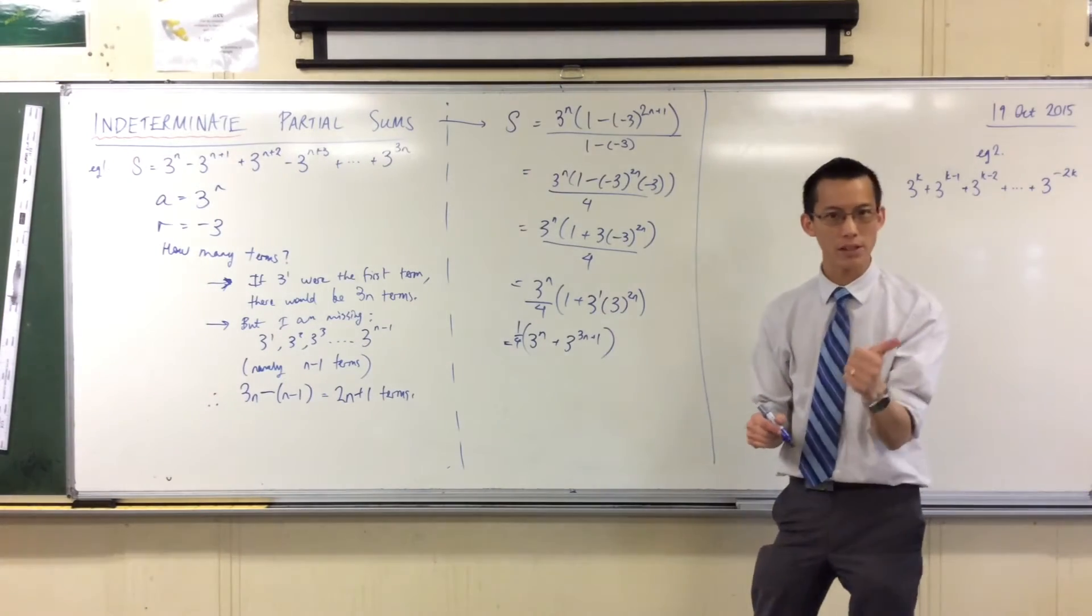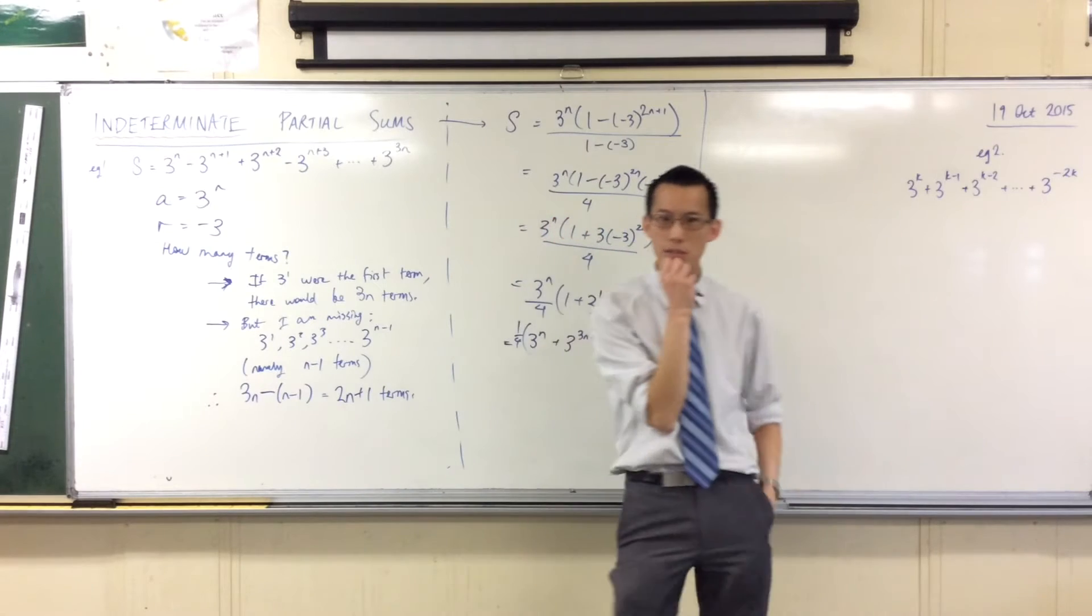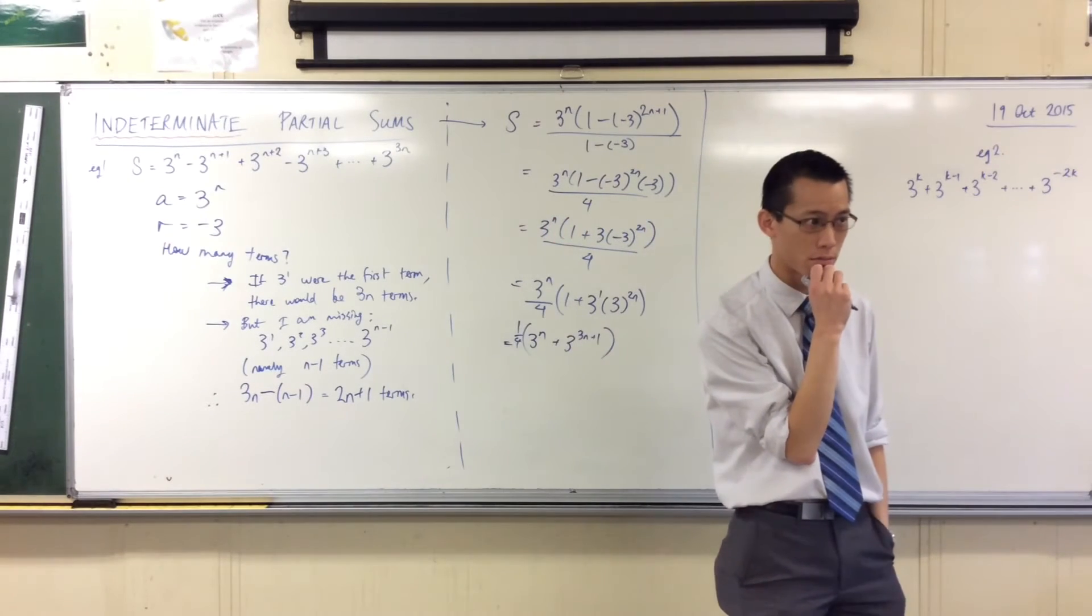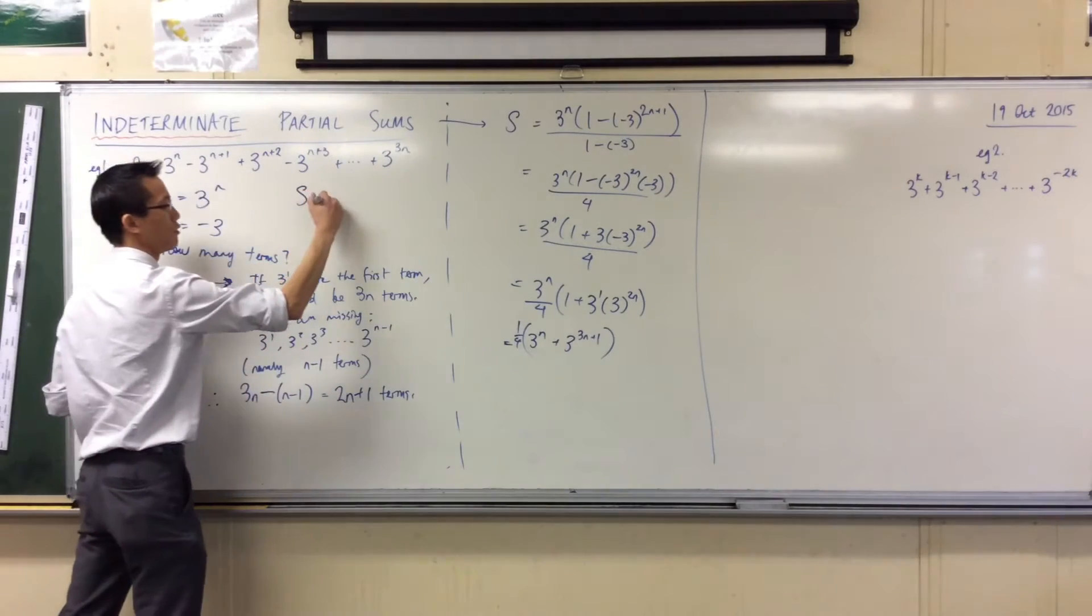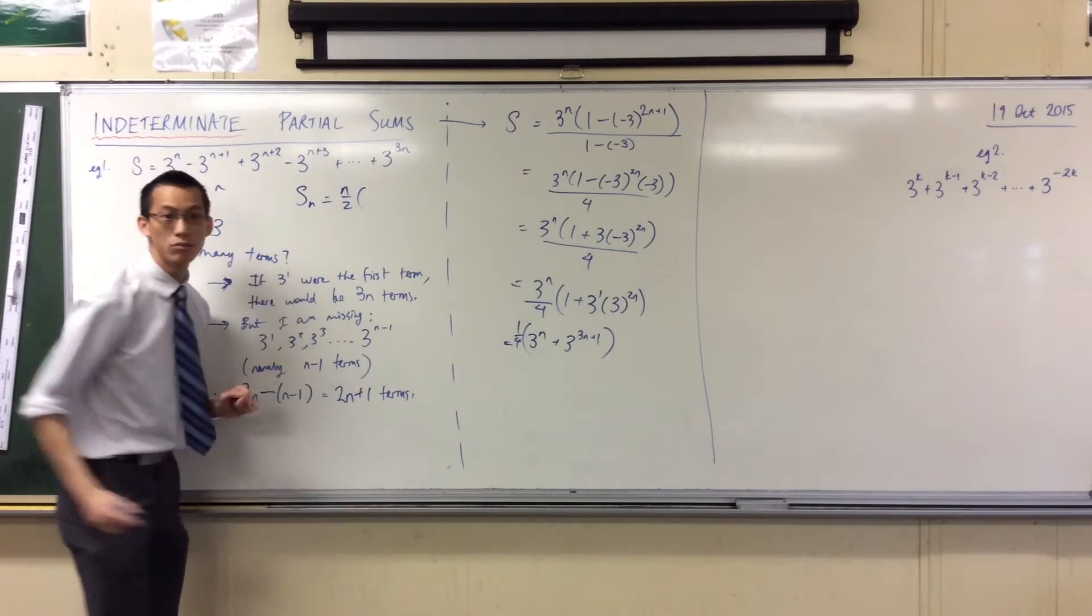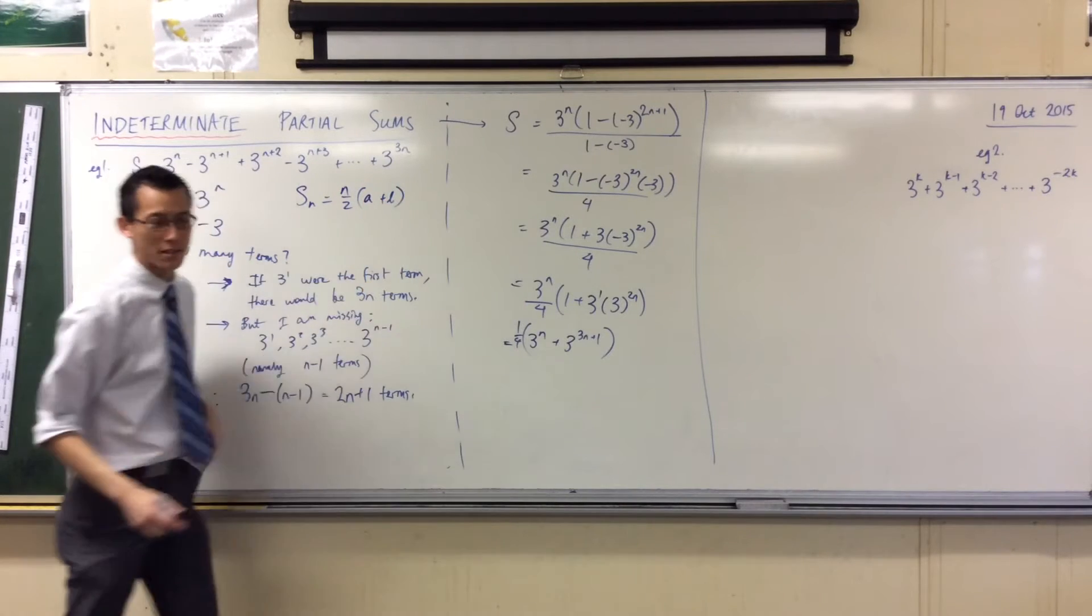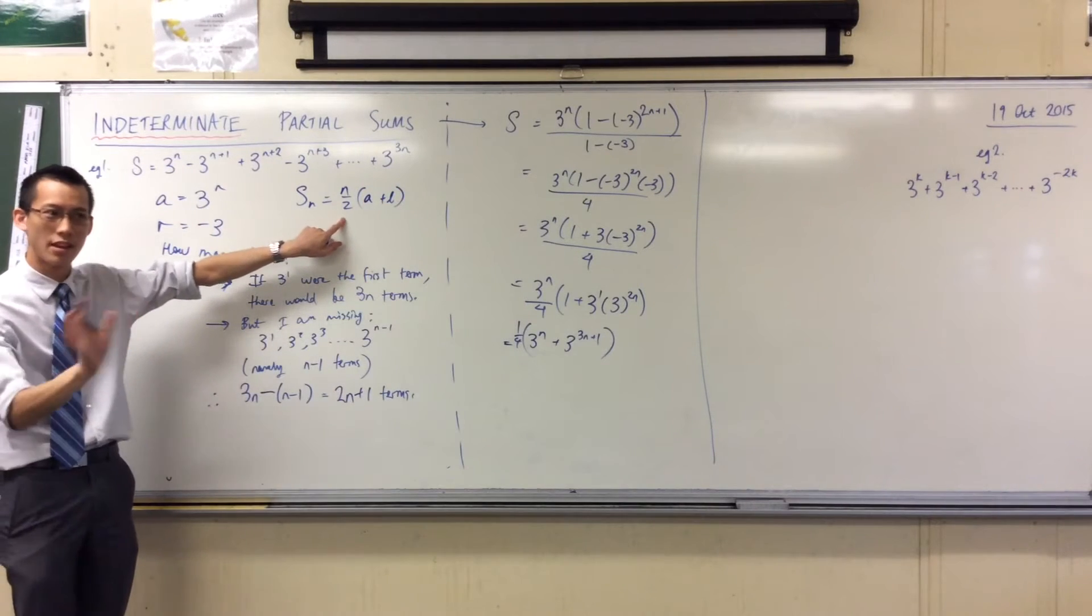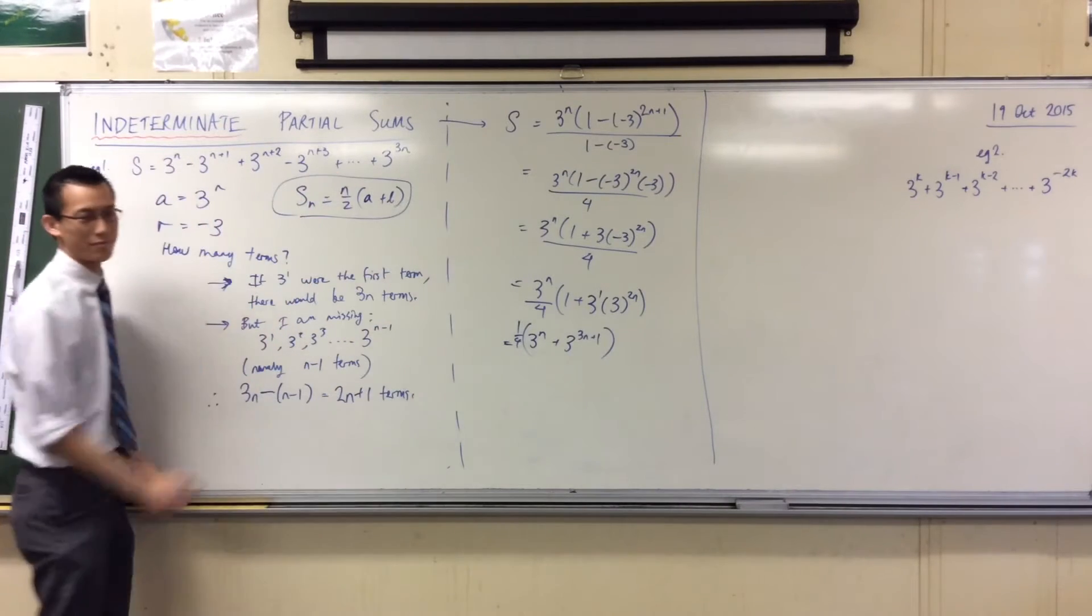I want to point out the formula that we learned from when you know the first term and last term - what kind of series does it apply to? It applies to APs. What was our formula? I'll give you a clue: it started with N on 2. What happened after that? Just A plus L - first term, last term. There's the pairing thing that happens, the story with Gauss.